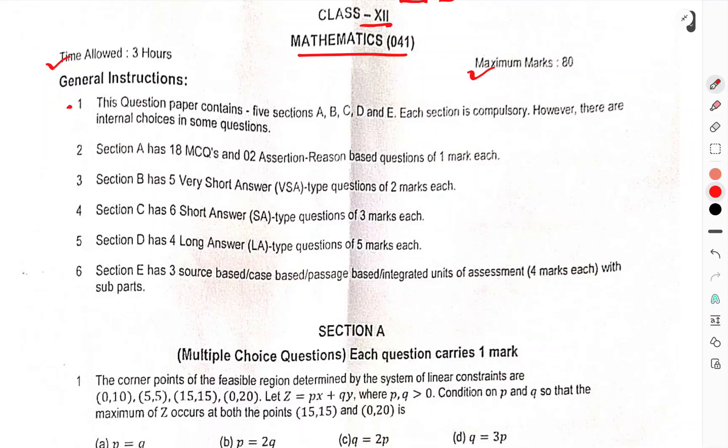Generally in success, this question paper contains five sections A, B, C, D, E. Each section is compulsory, however, there are internal choices in some questions. Section A has 18 MCQ, two assessment vision-based questions, one mark each.